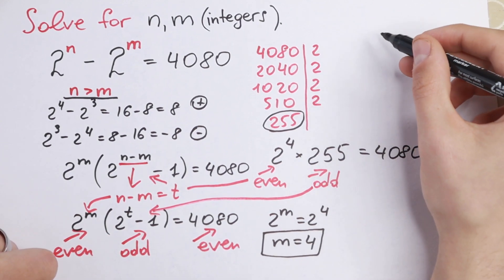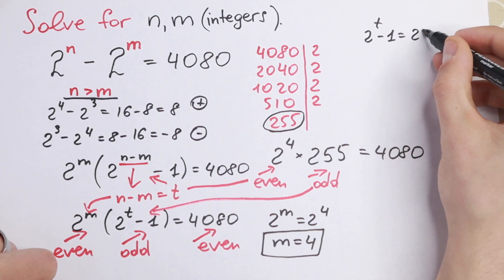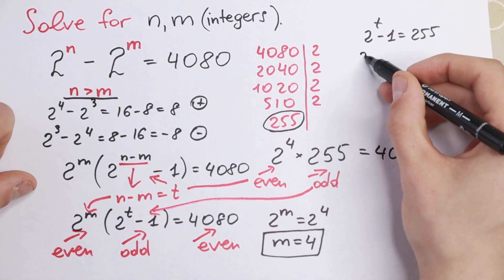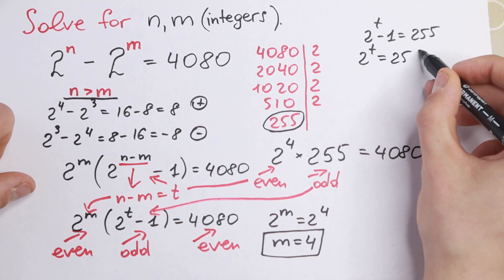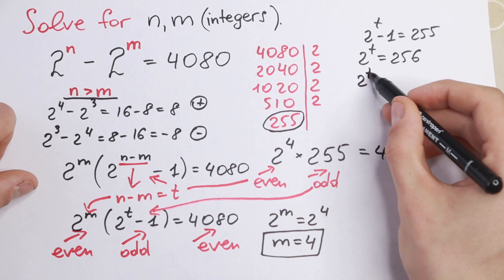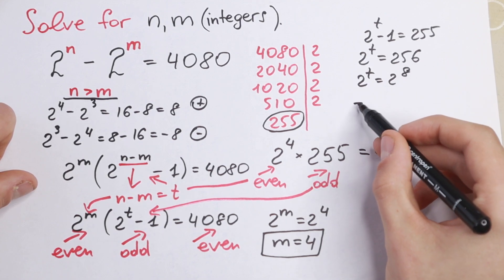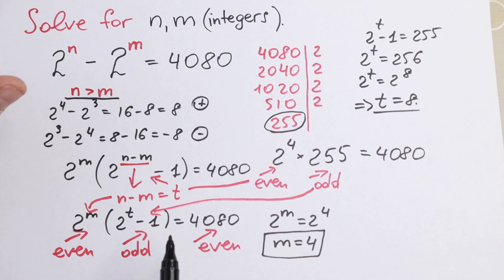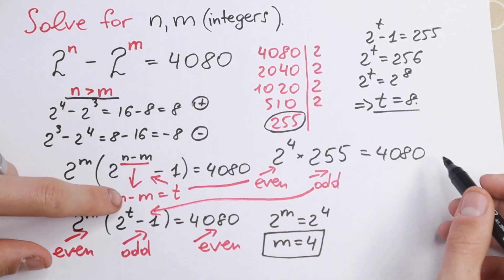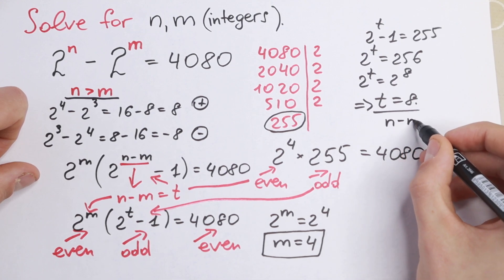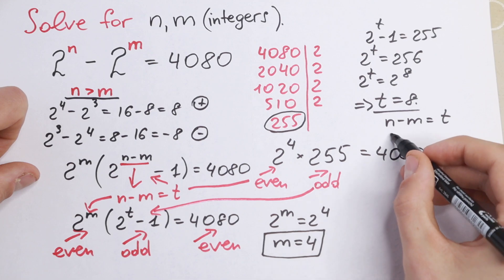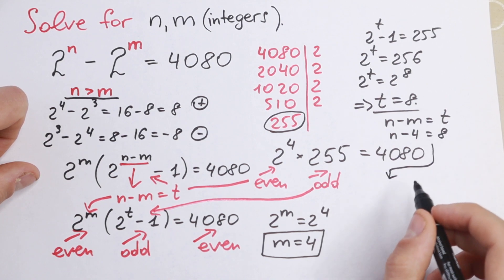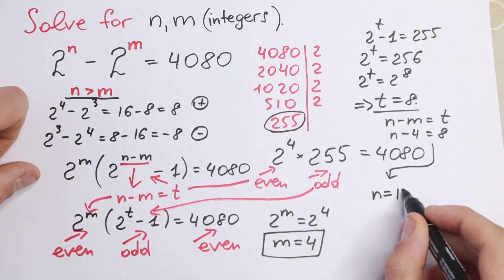For the odd part, 2 to the power t minus 1 equals 255. Adding 1 to both sides: 2 to the power t equals 256, and we know 256 equals 2 to the 8th power, so t equals 8. Since n minus m equals t, we get n minus 4 equals 8, therefore n equals 12.